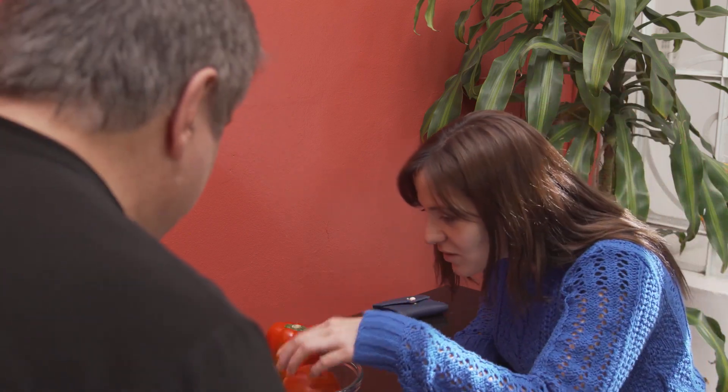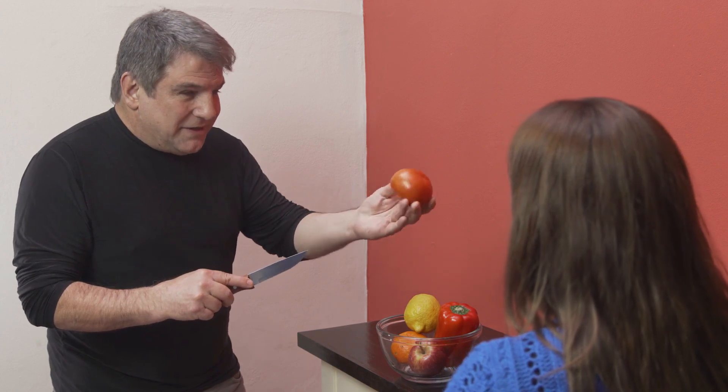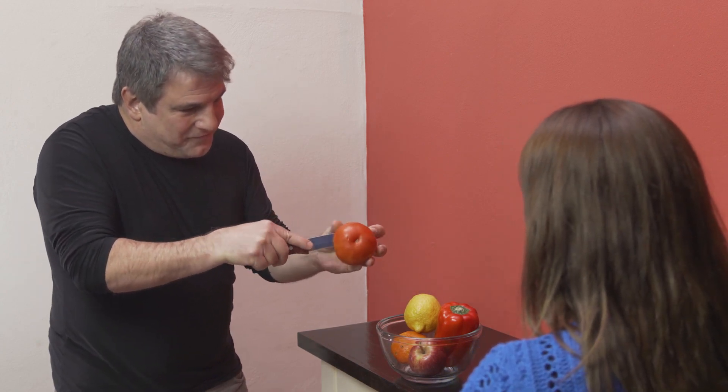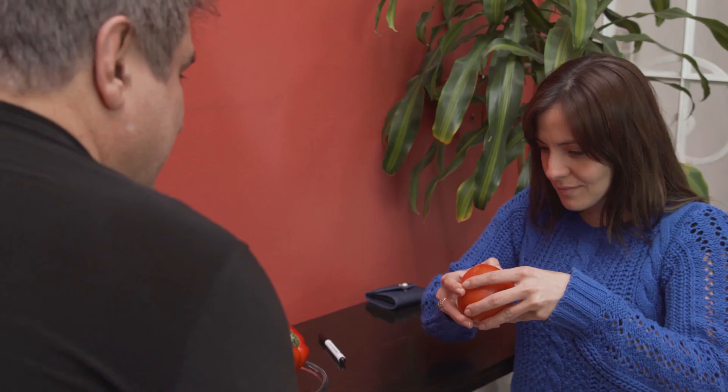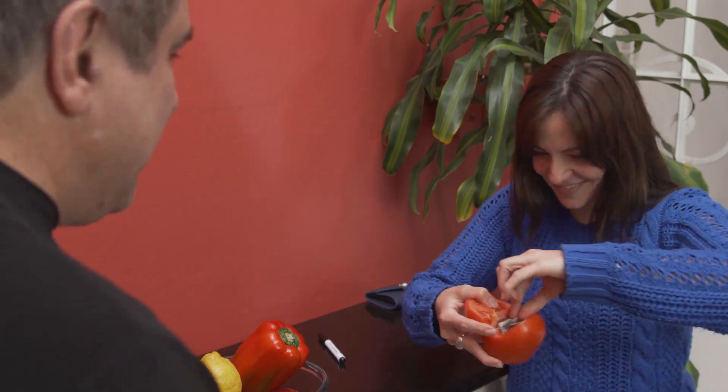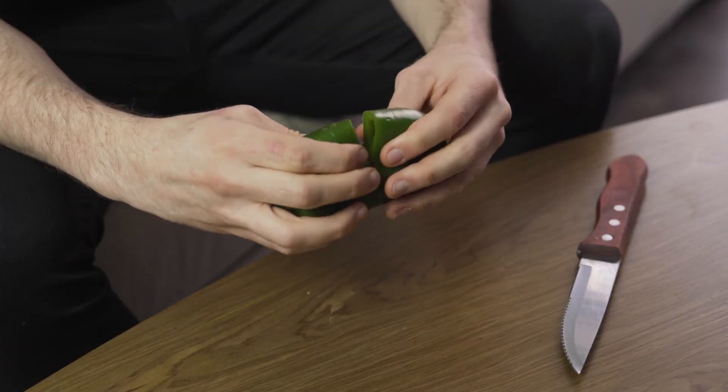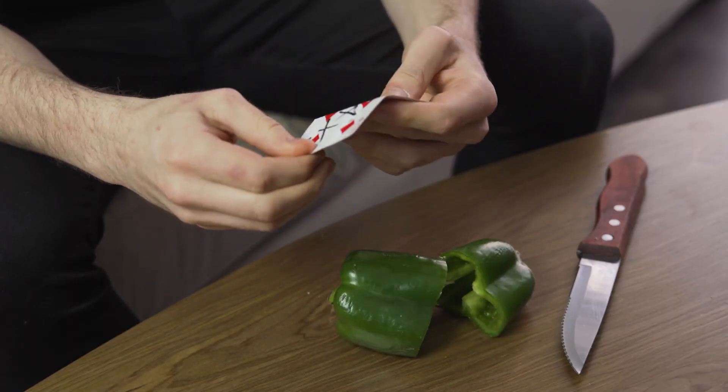And now comes the best part: the magician takes the chosen fruit and when he cuts it in half, the result is his signed bill inside. You will be able to make bills and cards appear in different fruits.